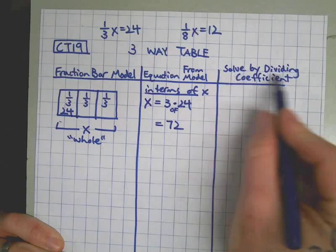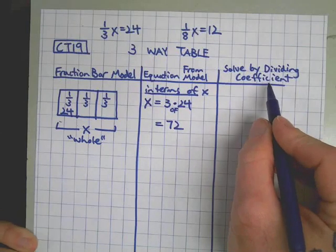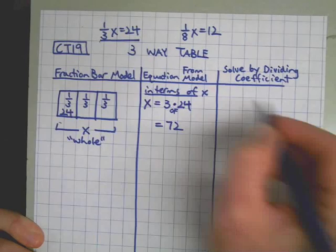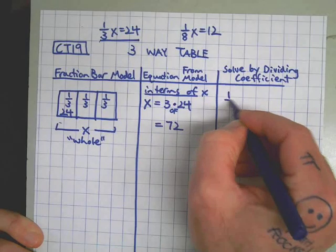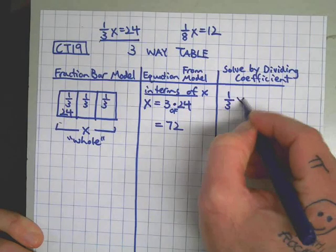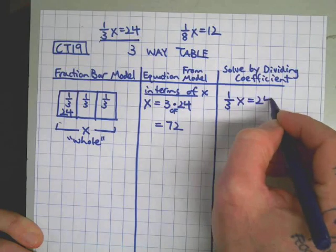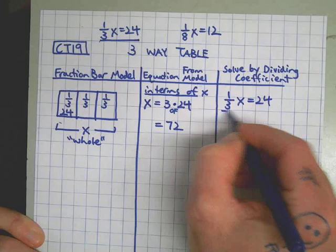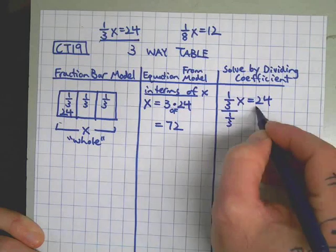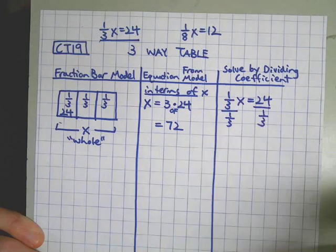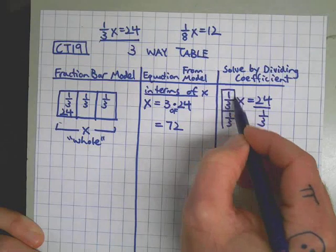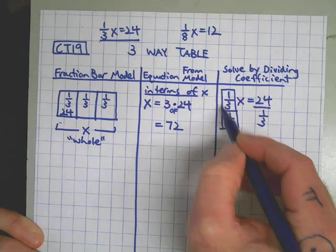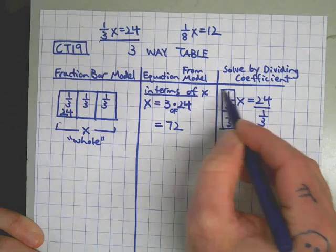Then finally over here, solve by dividing the coefficient. This is where, for this problem, we're going to rewrite this. We have a coefficient: one-third of the whole thing is 24. I can solve this problem by dividing both sides by the coefficient. The effect is that on this side, how many one-thirds fit into one-third? The answer is one. You can see my giant one around here.